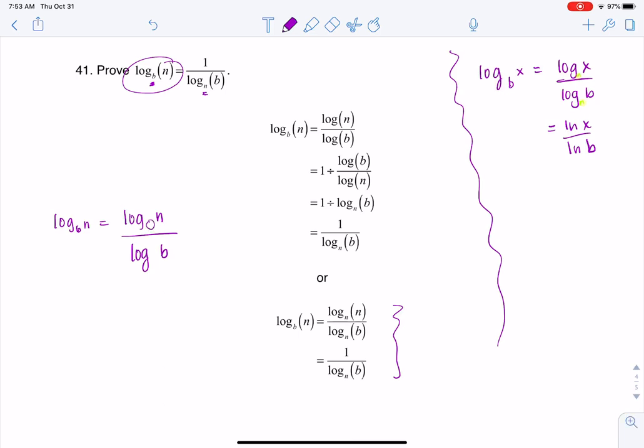But again, I don't have to have a common log down here. I can have any base I want. So make it N. Why not make it N? Because I've got an N over on the right side of the equation.